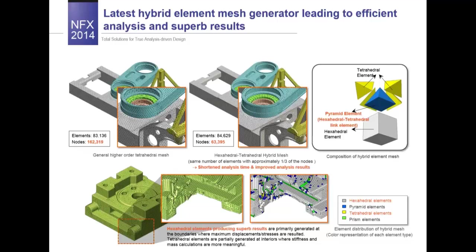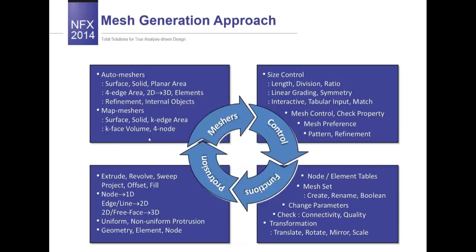The hybrid mesher uses all solid element types — tetra, penta, and pyramid elements — and assures a smooth transition between hexa and tetra elements, which contributes to minimizing the FEM model size. For example, using tetra elements only the model size may be around 160,000 nodes, but with the hybrid mesher it decreases to 60,000 nodes. Similar to geometry tools, we have access to advanced mesh modeling tools. We can create all element types from node to solid element, control mesh size using length, division, ratio, and symmetry methods, check mesh properties, create mesh sets and groups, collect nodes in tables, and connect or disconnect nodes.